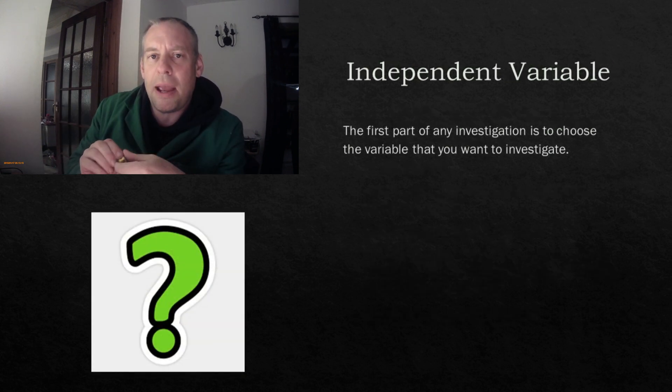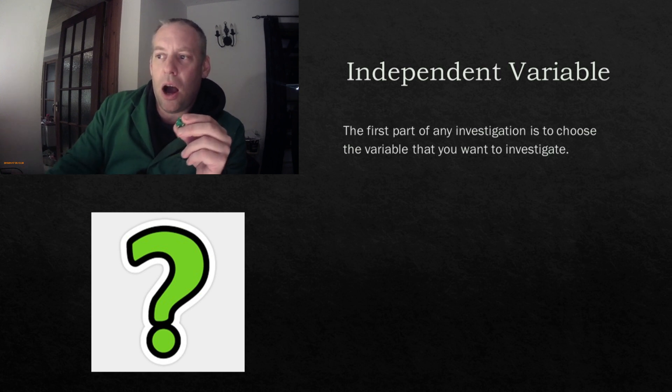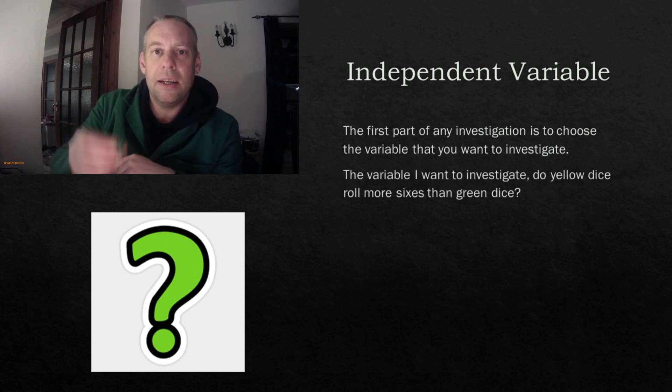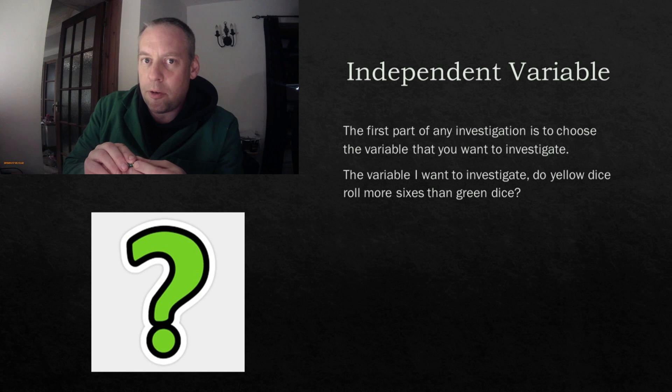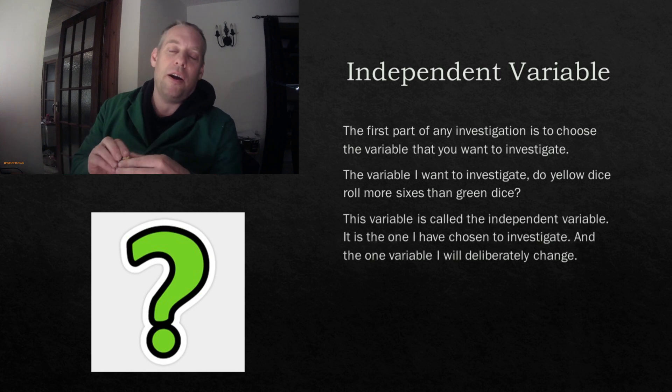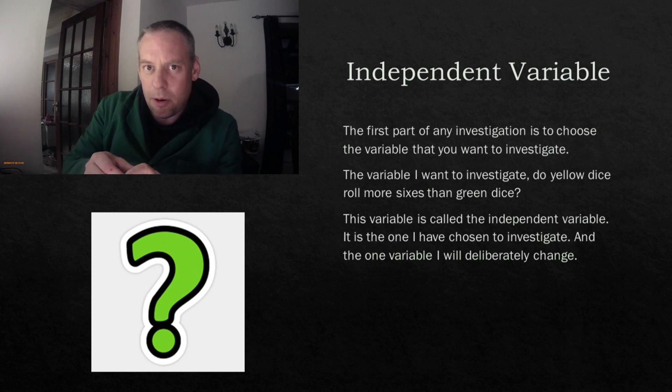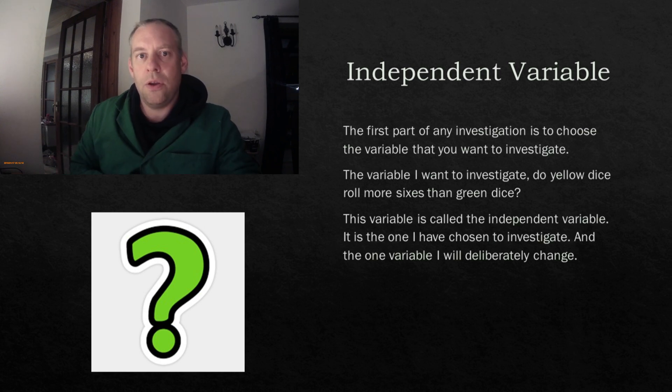Now what I've got to do in order to make my little problem a scientific investigation, I need to choose which factor I want to investigate. Which variable I want to investigate. So the one I've come up with is I'm going to find out if yellow dice roll more sixes than green dice. So that factor, the moment I've chosen that factor, that factor becomes my independent variable. And this is the one that I have chosen to investigate. And I will deliberately change that factor. That's the independent variable. It's the factor, the variable I have chosen to investigate.